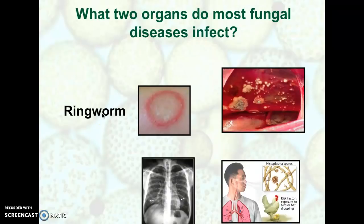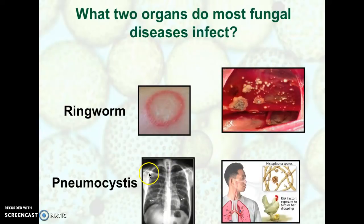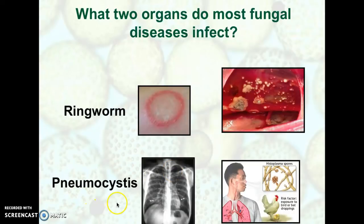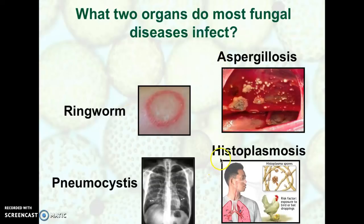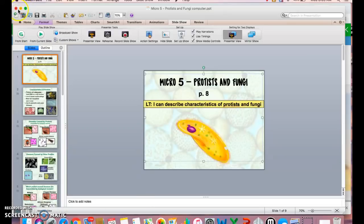So what two organs do most fungal diseases affect? Skin and the respiratory system — the lungs primarily. You either come in contact with a fungus and it gets onto your skin and reproduces there, or you breathe in spores which embed themselves in the respiratory tract. Aspergillosis and histoplasmosis all have an impact on either skin or lungs. You should now have finished your study on the five pathogens.